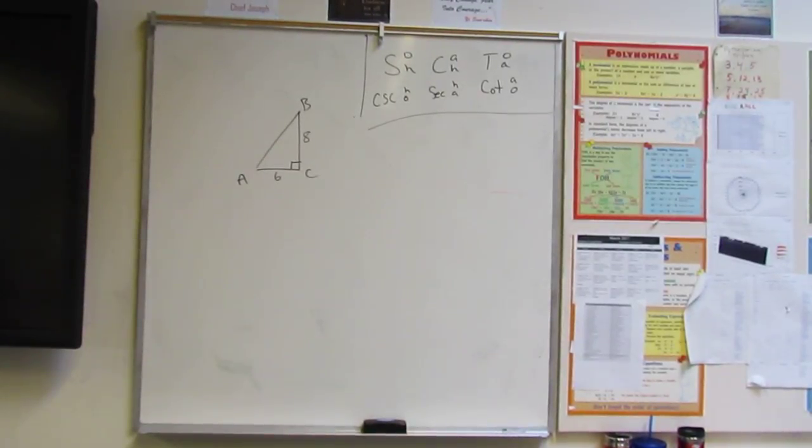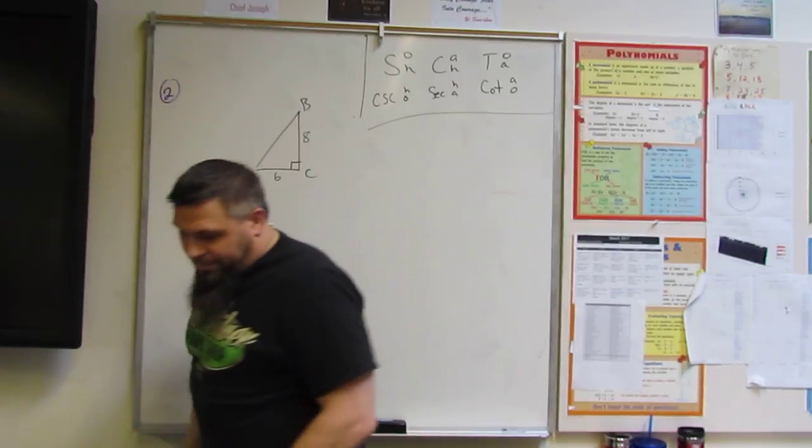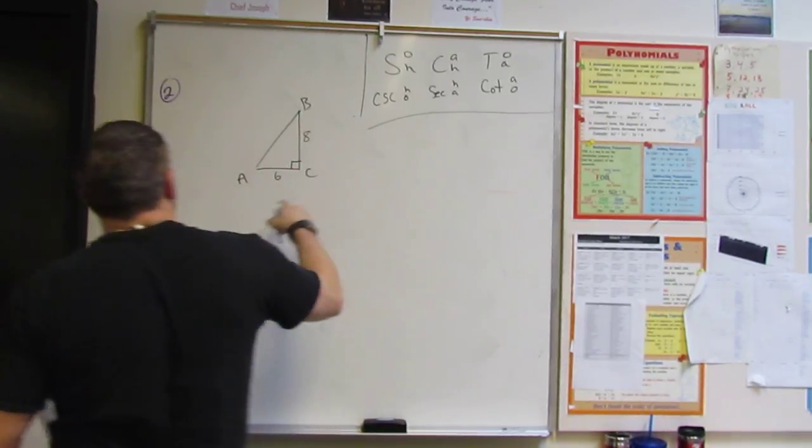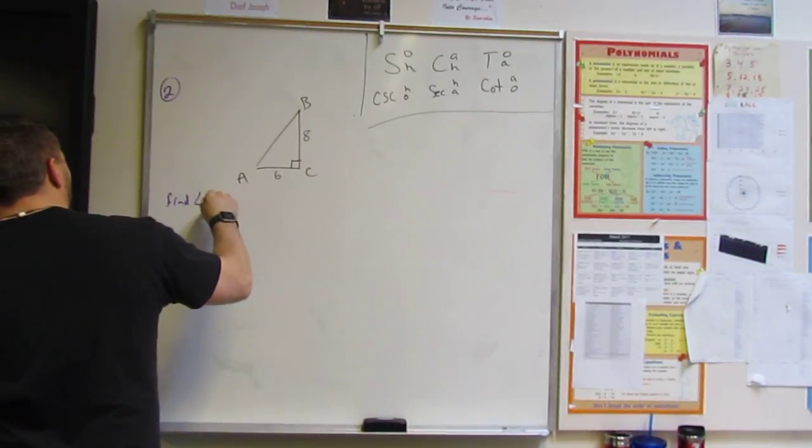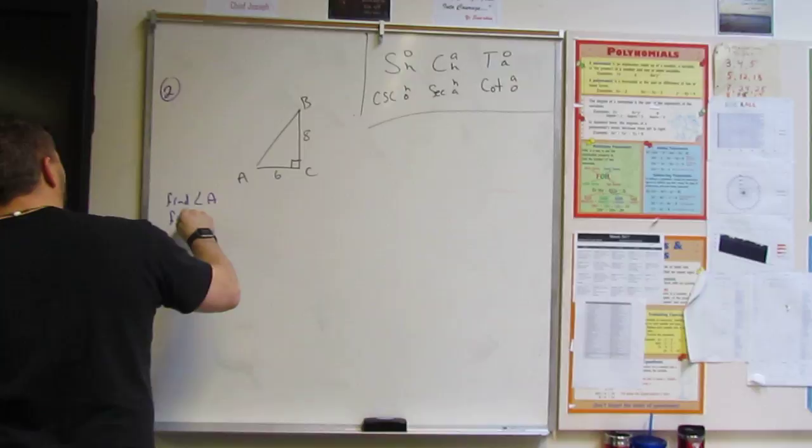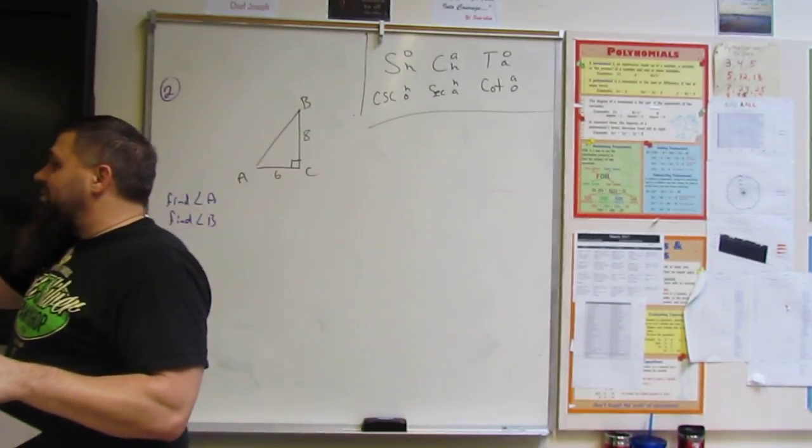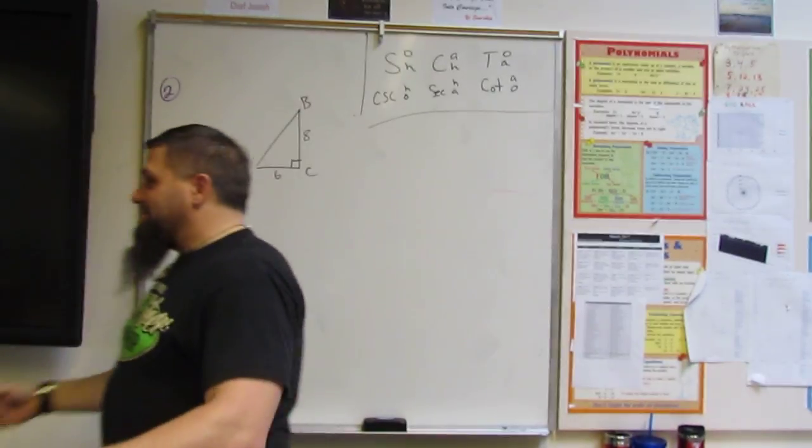So this is the second one, problem number two. It's pretty simple. We're going to find A and B. By the way, this is where they said they didn't use arc sine, arc cosine. Okay, because we're about to use it.